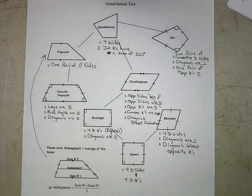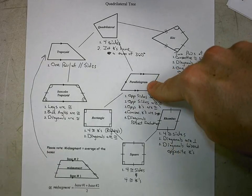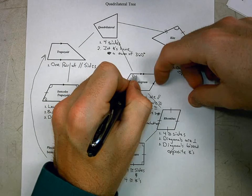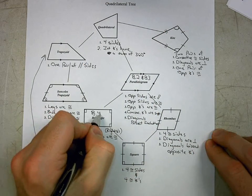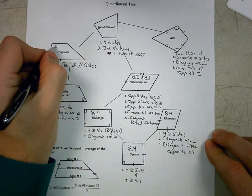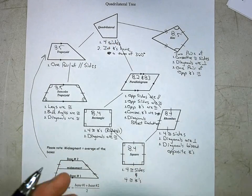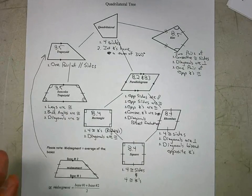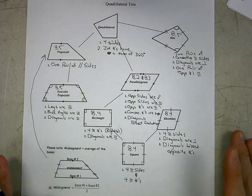These are all the properties we should already have. If you're not sure about any of them, go back and look at the relevant videos. Parallelogram was 8.2 and 8.3; rectangle, rhombus, and square were 8.4; trapezoid, isosceles trapezoid, and kite were 8.5. Make sure you have a good foundation on all of these before working through the homework.